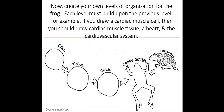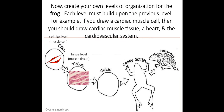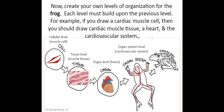Now let's create the levels of organization for a frog. We start with a cardiac muscle cell. That muscle cell with other muscle cells makes muscle tissue. All that muscle tissue together makes a heart. The heart connected with veins and arteries makes the cardiovascular system, and all of the systems together create that frog — the organism.